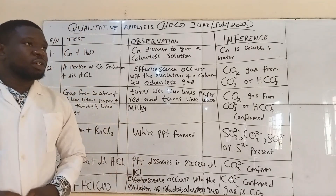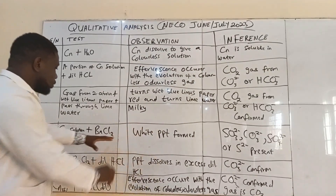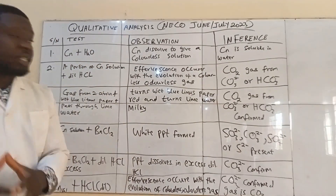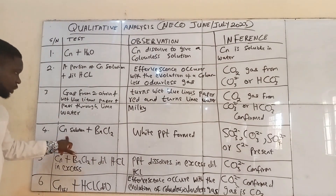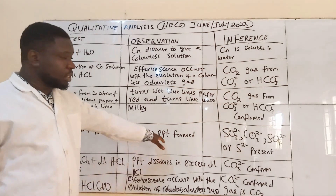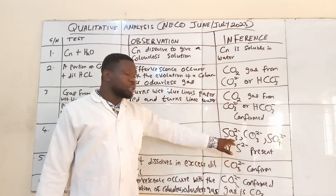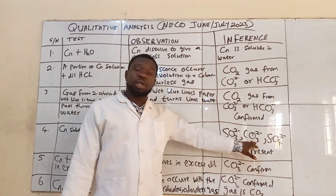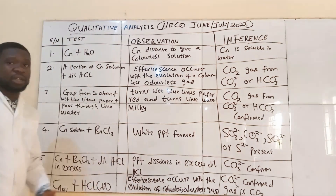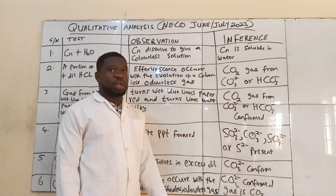Other tests you can carry out on this material as well — it does not have to be only those three tests. Another test you can carry out: bring the salt solution and add barium chloride. If you add barium chloride to the solution of the salt, it will form a white precipitate. If it forms a white precipitate, the ions to suspect are the SO₃²⁻ ion, the CO₃²⁻ ion, the CrO₄²⁻ ion, or the S²⁻ ion.